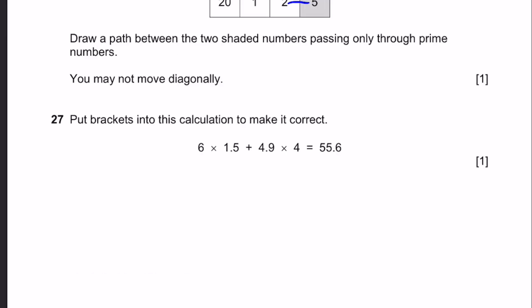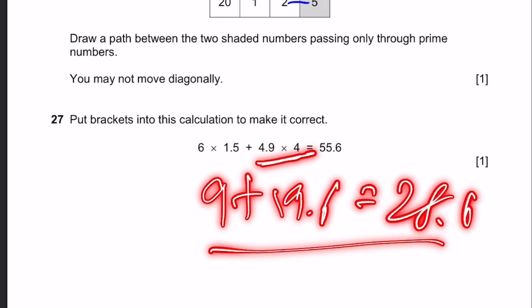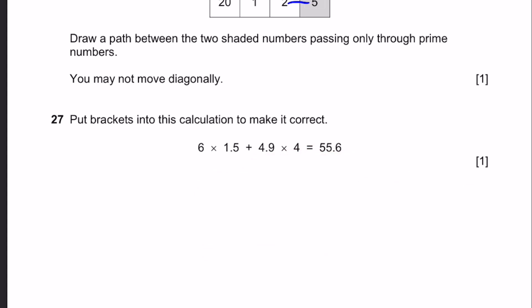Question 27. Put brackets into this calculation to make it correct. 6 into 1.5 plus 4.9 into 4 is 55.6. Right now you'll get 6 into 1.5, which is 9, plus 4.9 into 4, which is equal to 19.6. So you'll get 28.6, and that's not equal to 55.6. So you need to put a bracket. Actually, the only place you need to put a bracket is this, because multiplication comes first. So this will be 9. Add 4.9, we get 13.9. And 13.9 into 4 is equal to 55.6, as given. So we only need to put brackets over here. That's the answer.